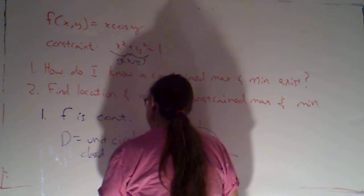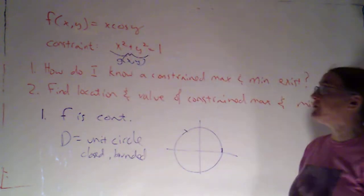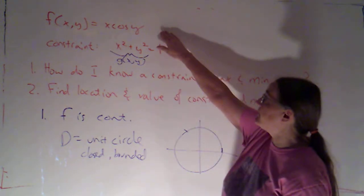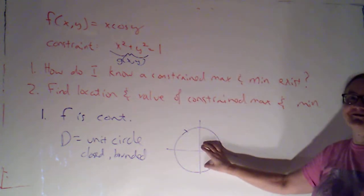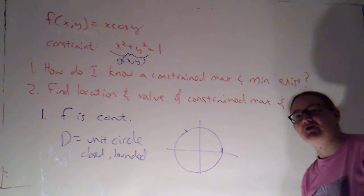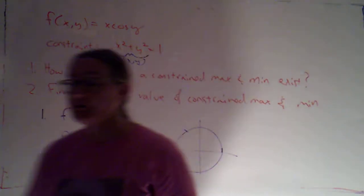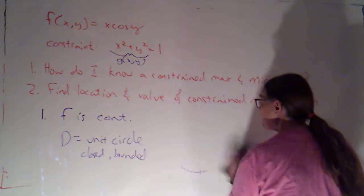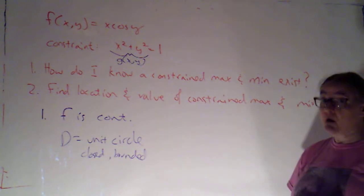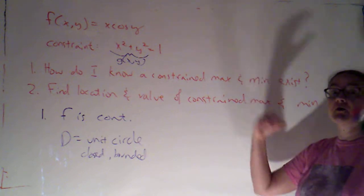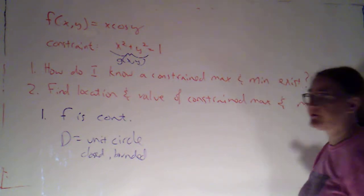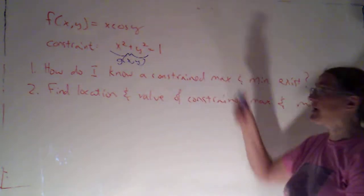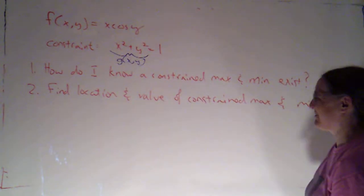So in this particular case, the extreme value theorem ensures that I will have an absolute max and an absolute min of this function on the unit circle. The constrained max and min will actually be the absolute max and absolute min on this circle. It's not necessarily always going to be the case that our constraint puts us into a closed and bounded region, so the extreme value theorem may not always apply, but it does in this case.